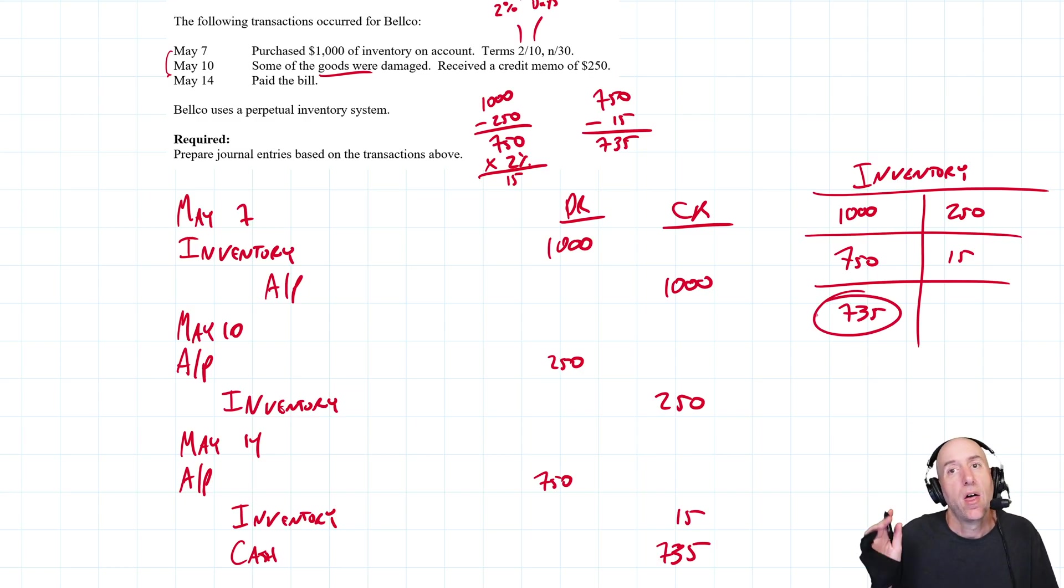Now we're left with $750 of inventory after that. Well, we credit our inventory $15 here, meaning after all is said and done, we only purchased $735 worth of inventory. That hits me as being correct. Why is that correct? Because that's what I paid for the inventory.